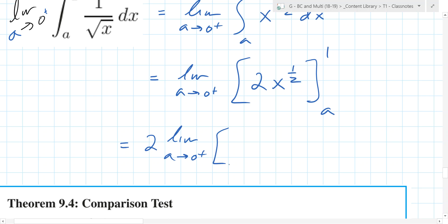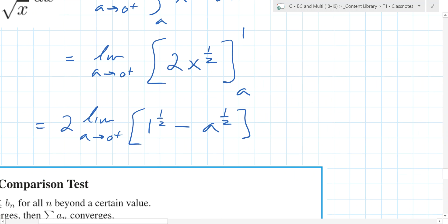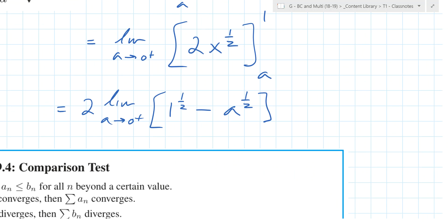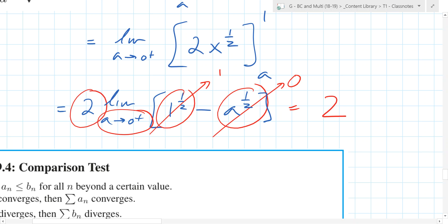So we have 1 to the one-half, correct? Minus what? a to the one-half. Is that correct? What? 1. This just goes to 1. What does this go to? As a is going to 0 from the right, what does that go to? As a goes to 0 from the right, the square root of 0 is what? 0. So what does this equal? 1. Times 2 is? 2. So does it diverge or converge? It converges.